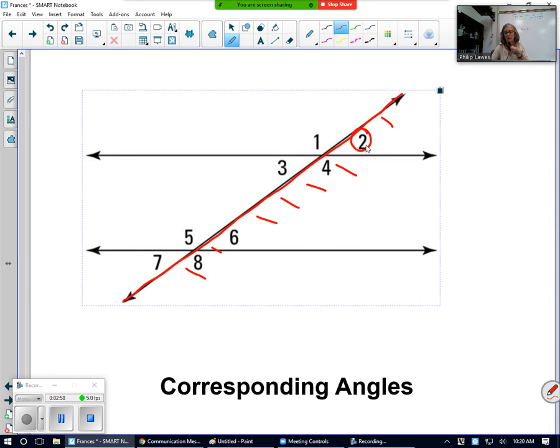Angle 2 is above its parallel line and to the right of the transversal. So the angle that's corresponding in position to angle 2 is angle 6. So let's go ahead and circle that.